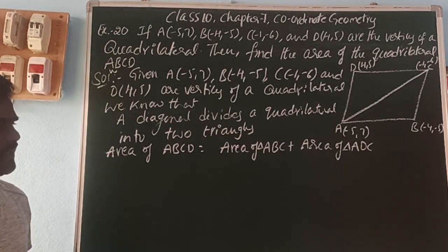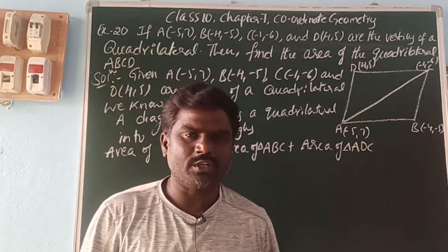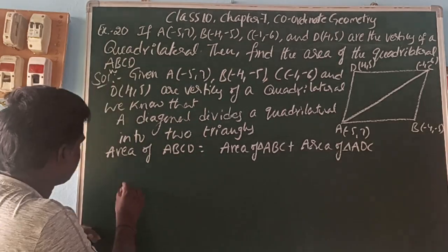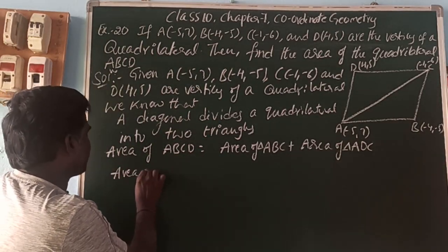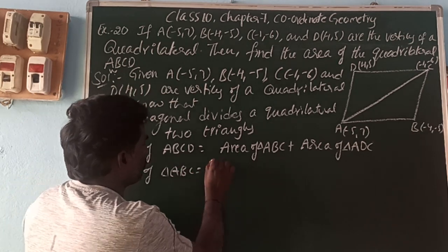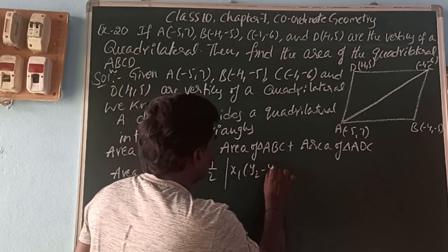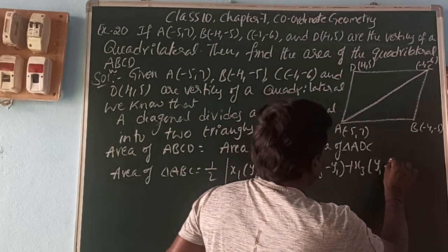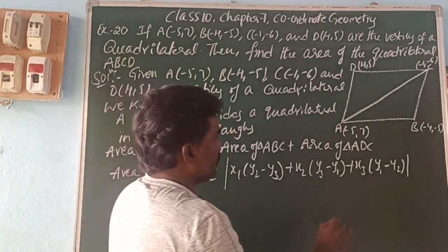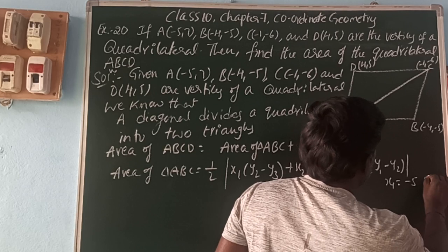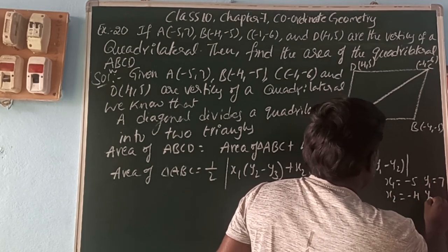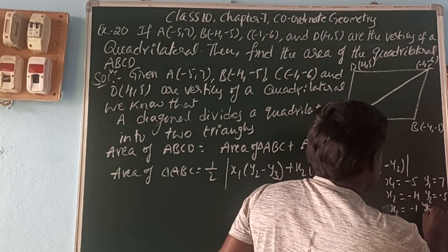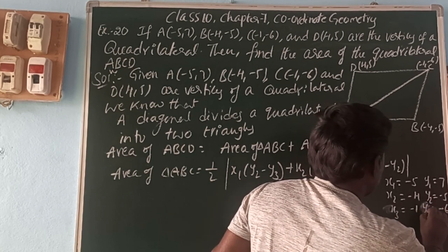The area of a triangle formula is: (1/2)|x1(y2 − y3) + x2(y3 − y1) + x3(y1 − y2)|. First, find the area of triangle ABC. Here x1 = -5, y1 = 7, x2 = -4, y2 = -5, x3 = -1, y3 = -6.